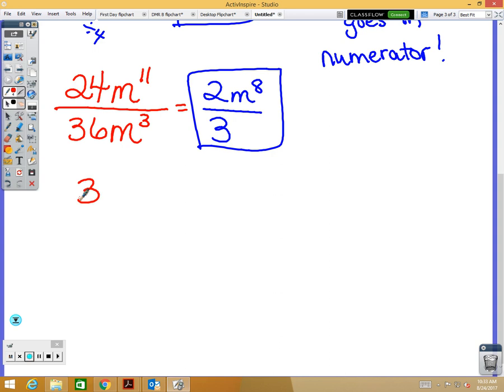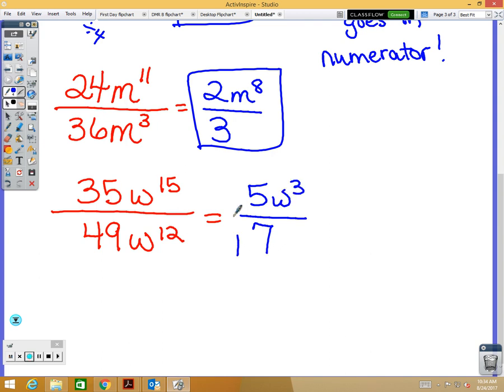How about... All right. So, 35 and 49 can both be divided by 7. 35 divided by 7 is 5. 49 divided by 7 is 7. My base is W. 15 minus 12 is 3. So, W to the third power goes and the numerator by the 5. W to the third power. All right. We feel okay with those?